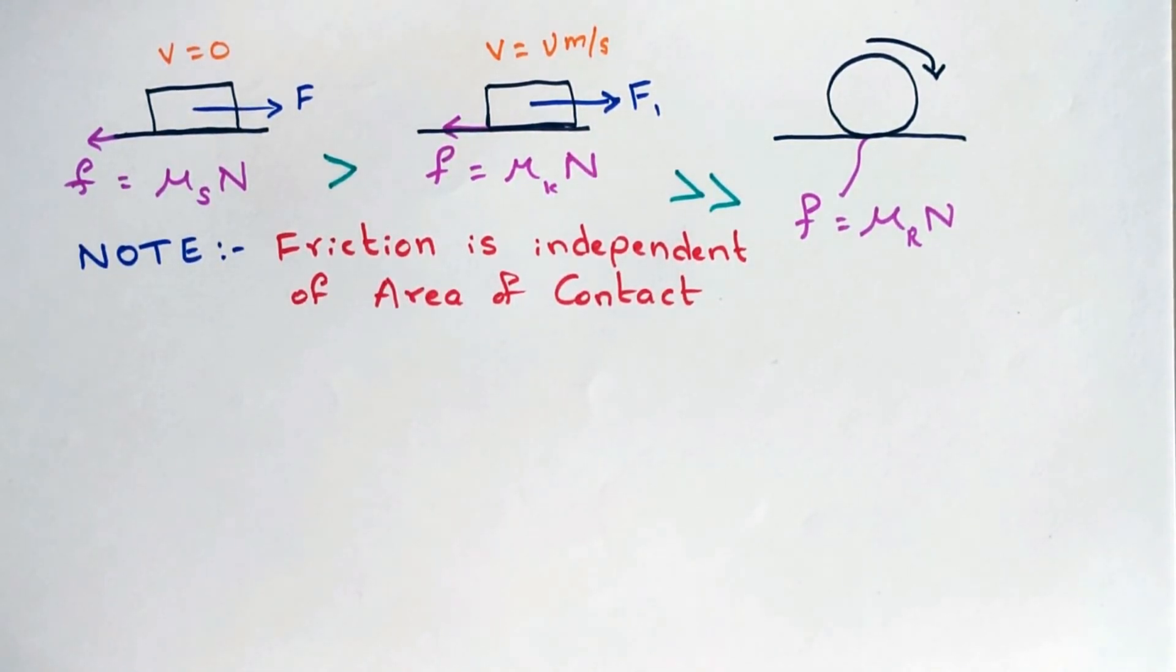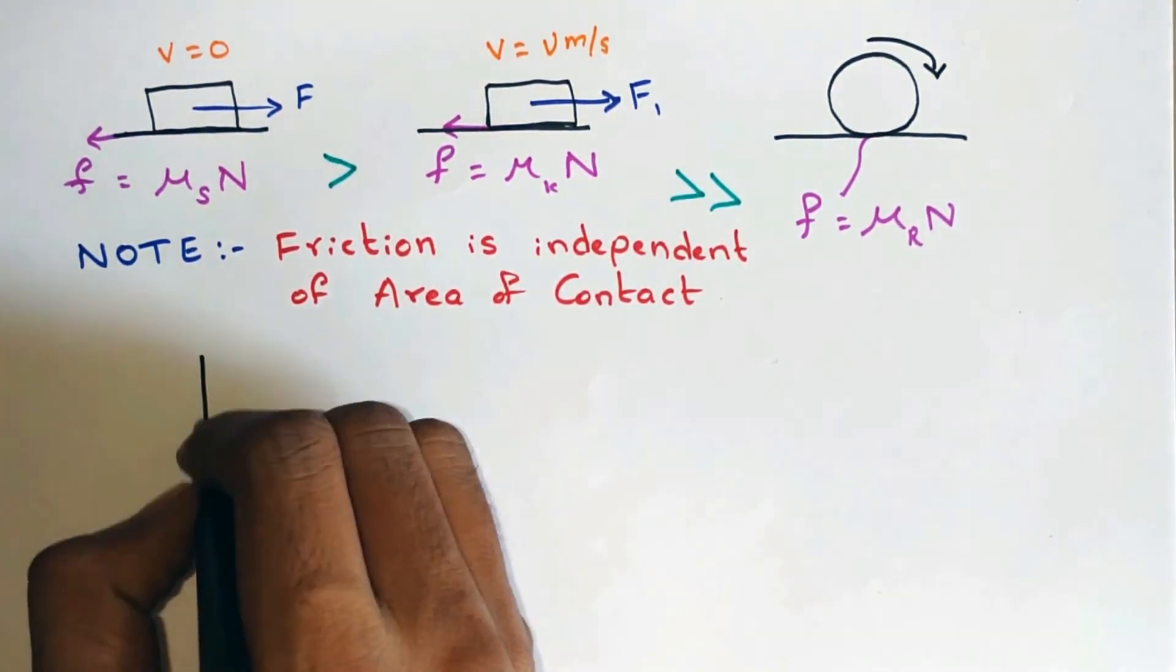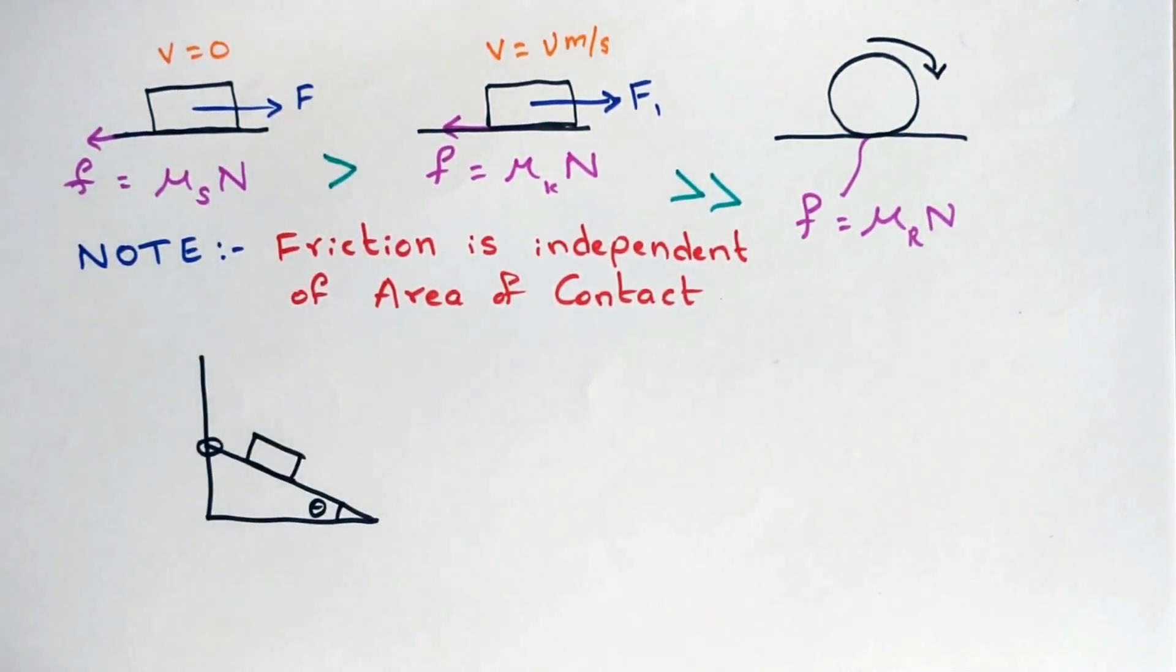Now you can do an experiment in order to find the static friction coefficient. Place a block on an inclined plane. As we know, under static condition, applied force will be equal to the friction. We can write F is equal to mg sin theta.